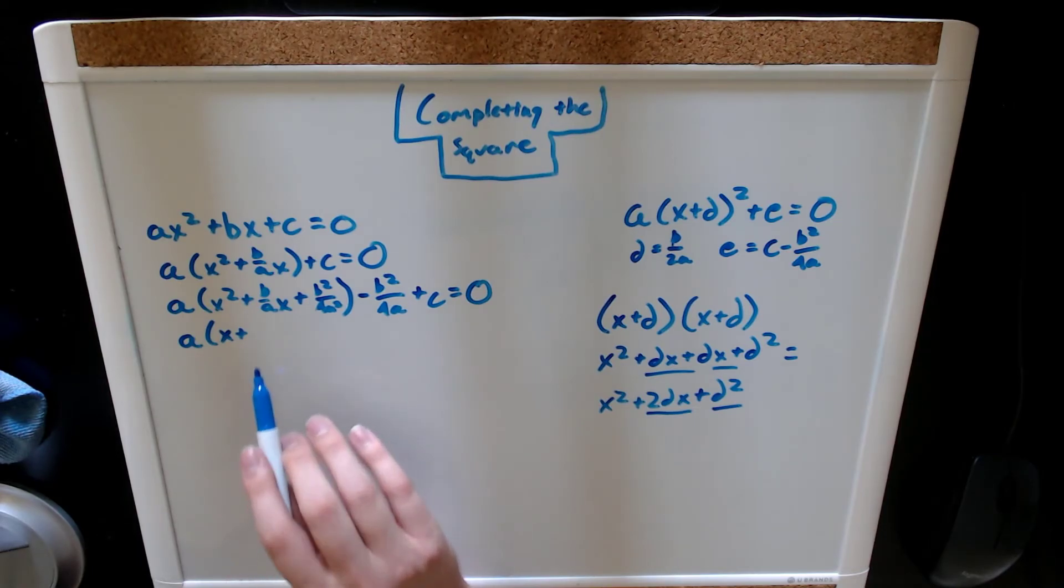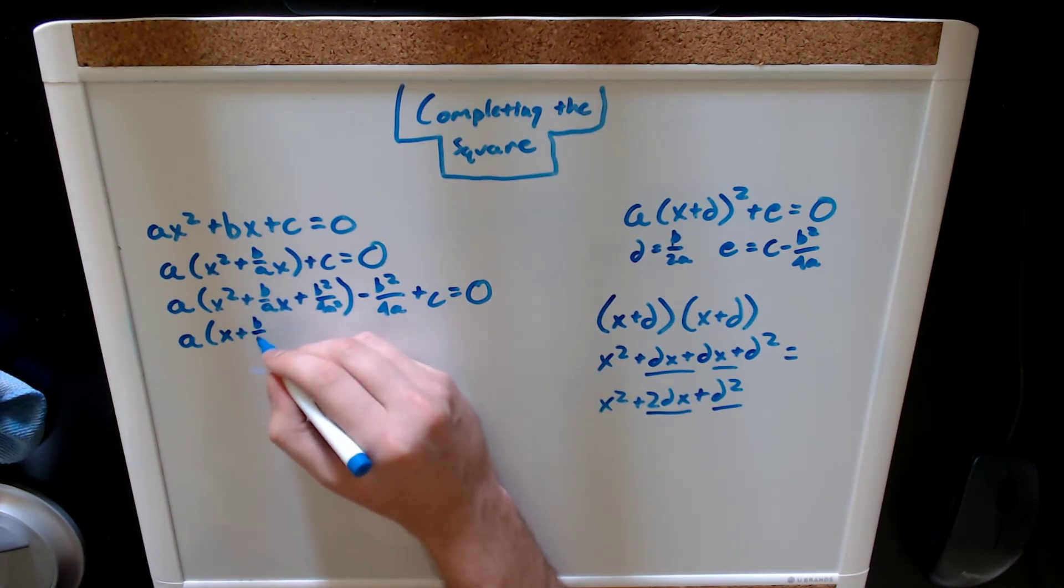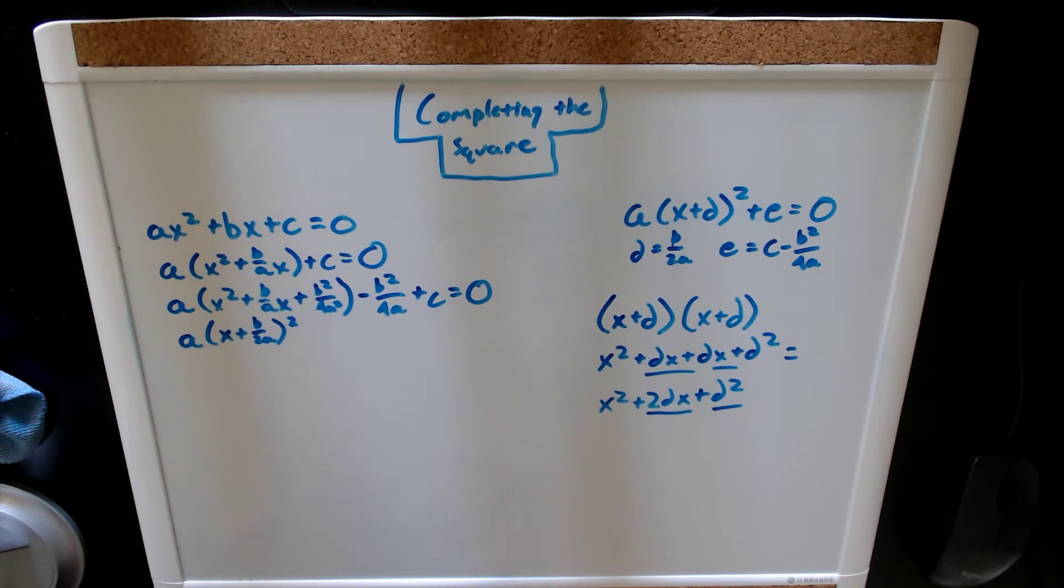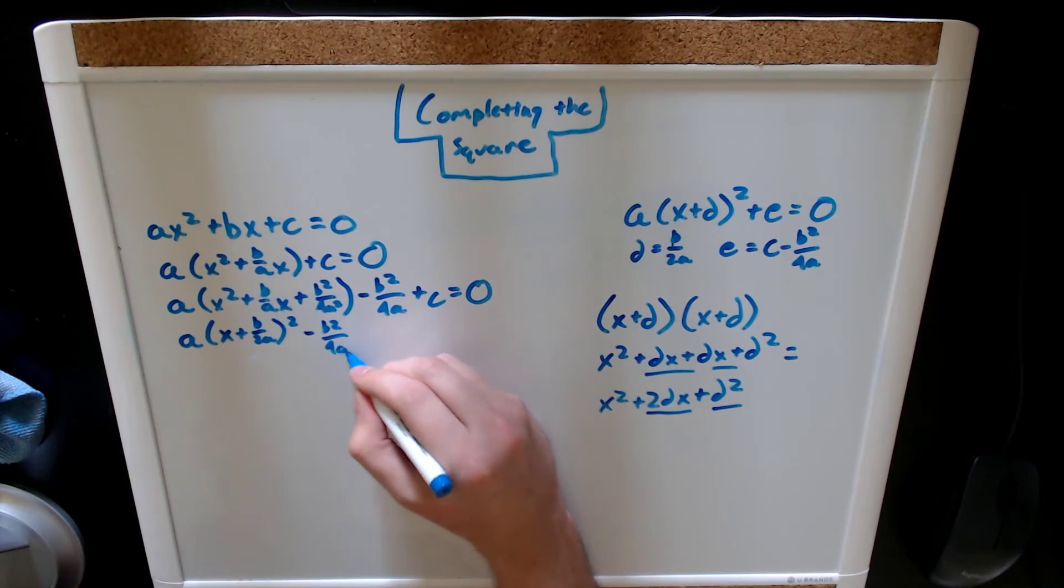So, I'm going to keep it simple, and I'm just going to divide our b term by two. So, b over 2a. Set it squared, and bring down the rest of our equation. b squared over 4a plus c equals zero.